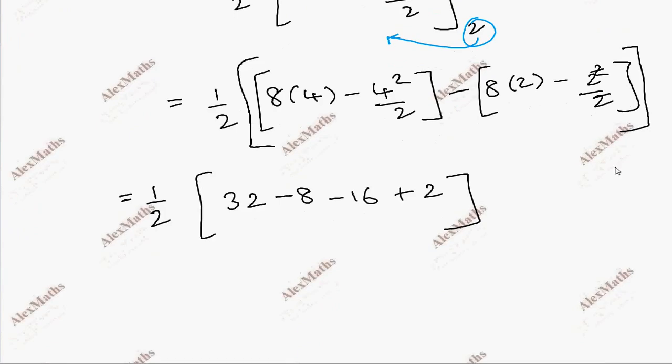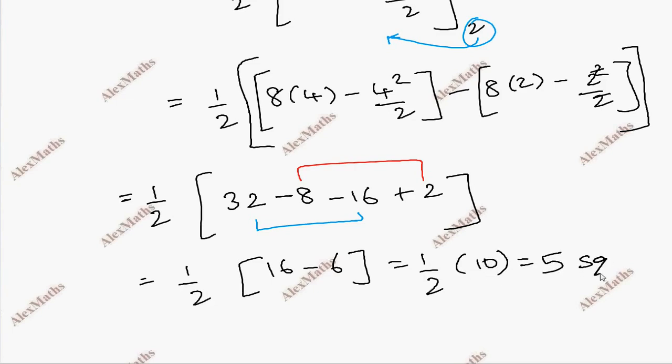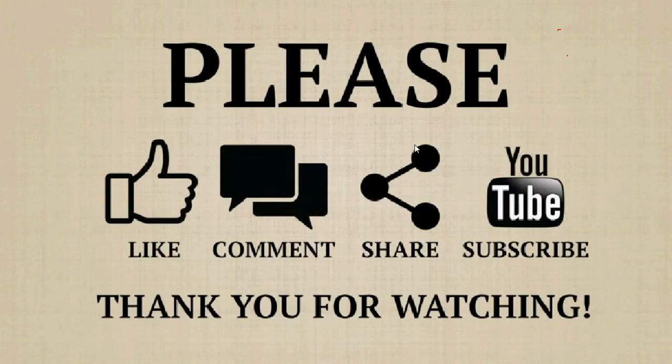Again grouping and subtracting, this is 16 minus 6, so half into 10, which is 5. So the answer is 5 square units. Thank you.